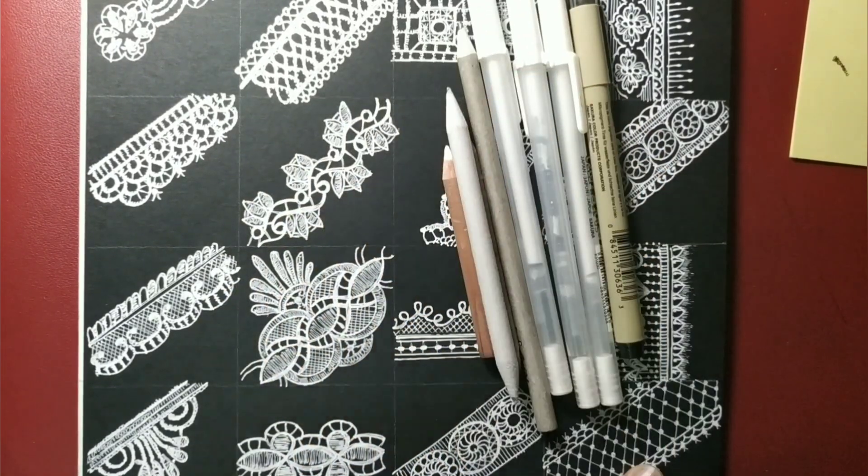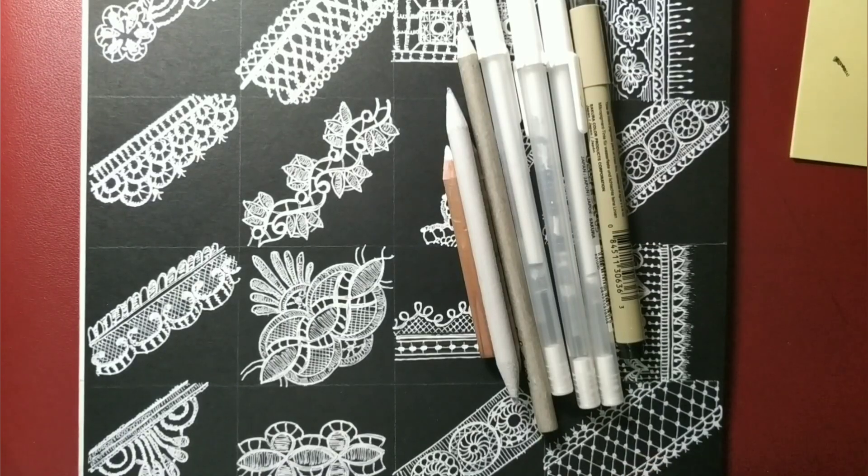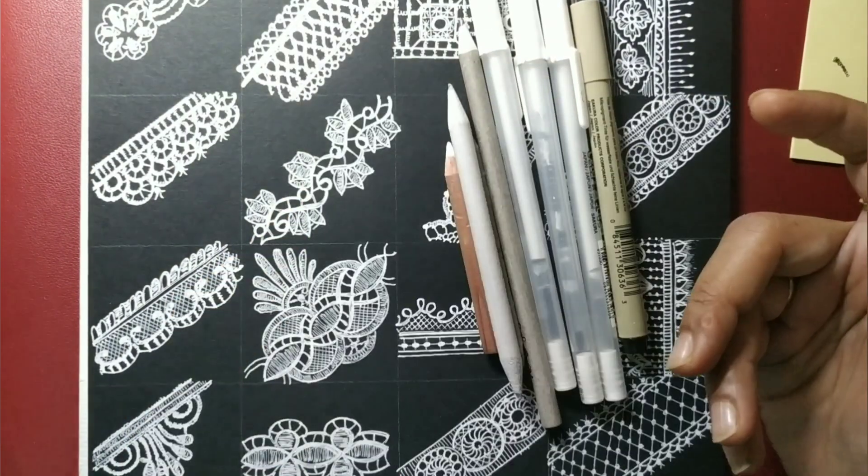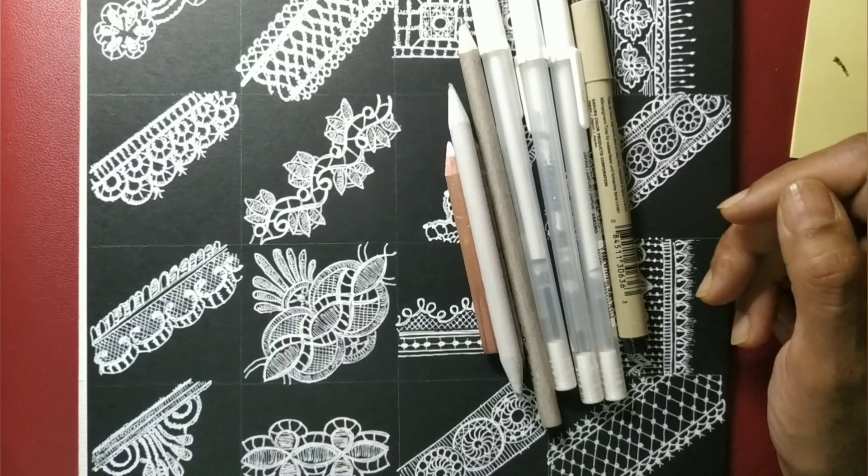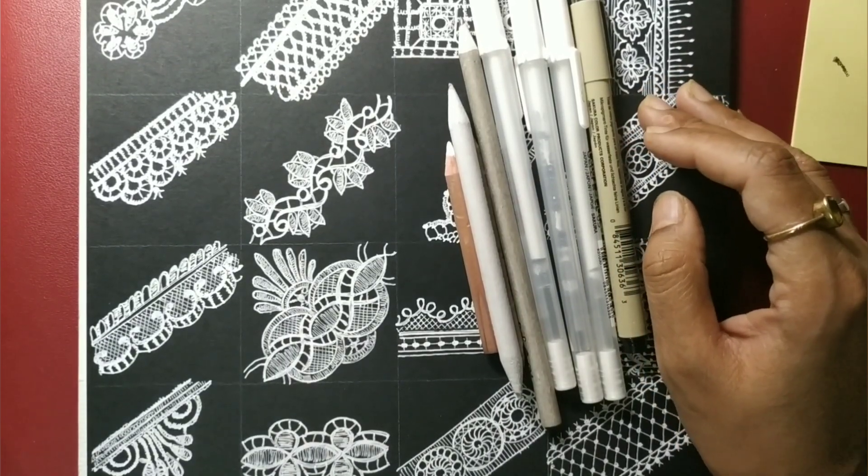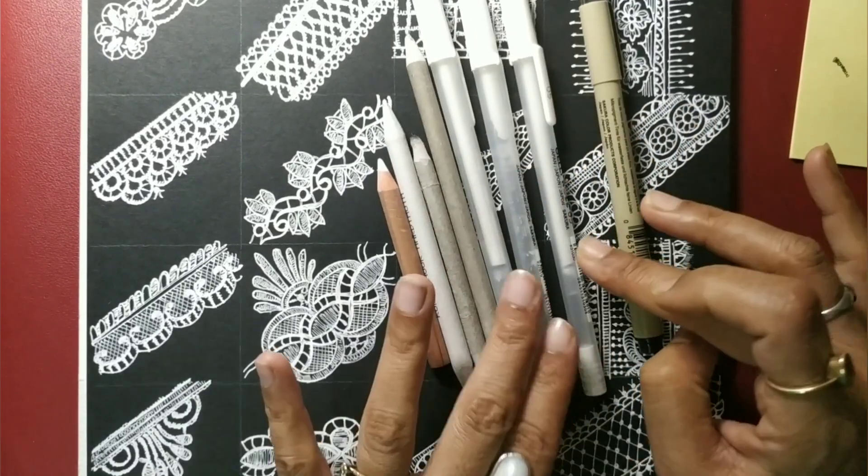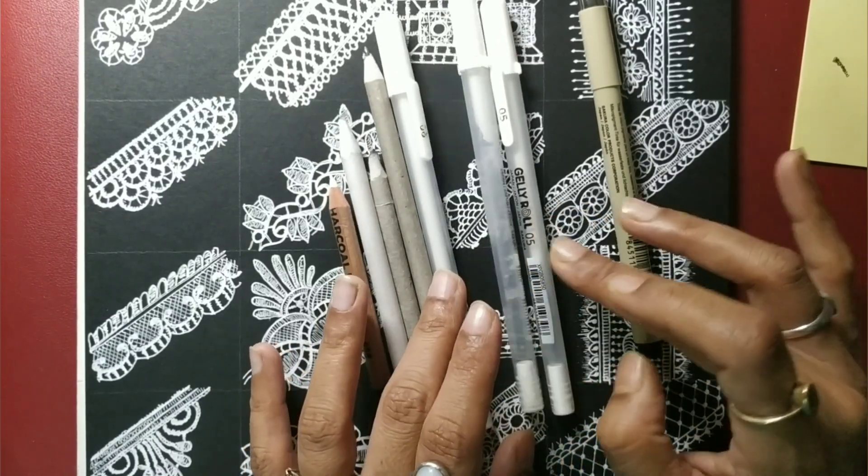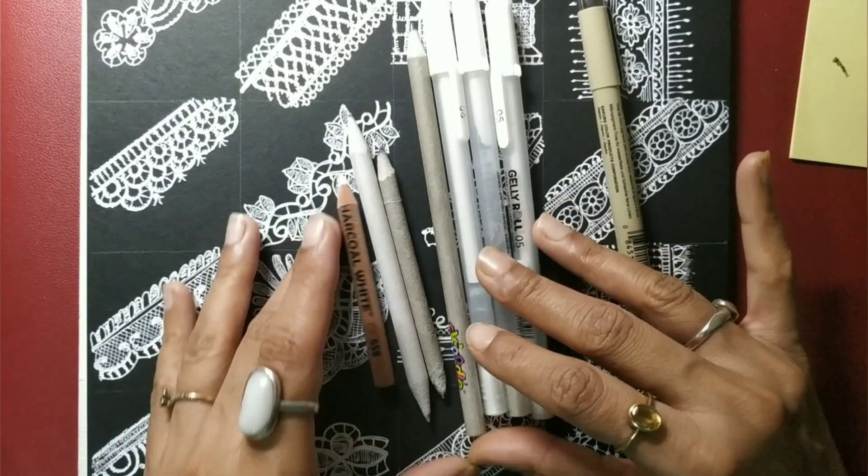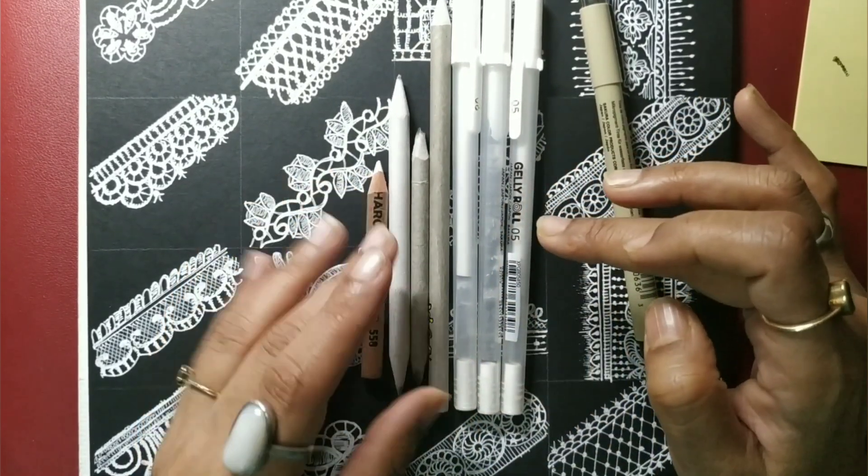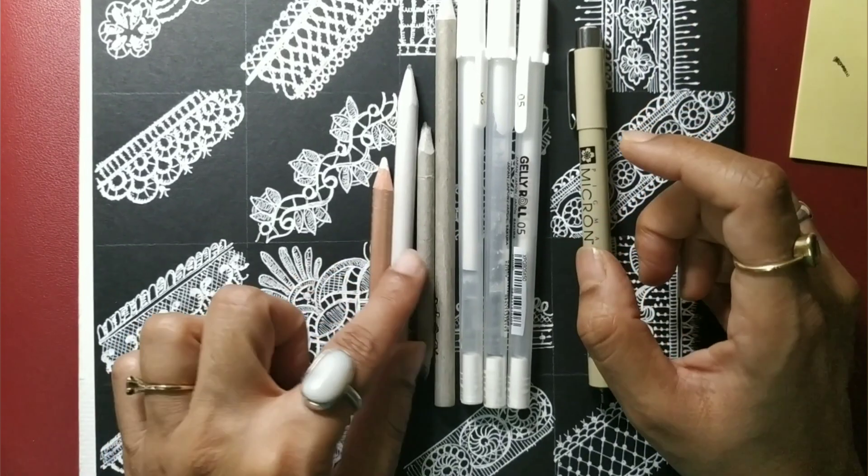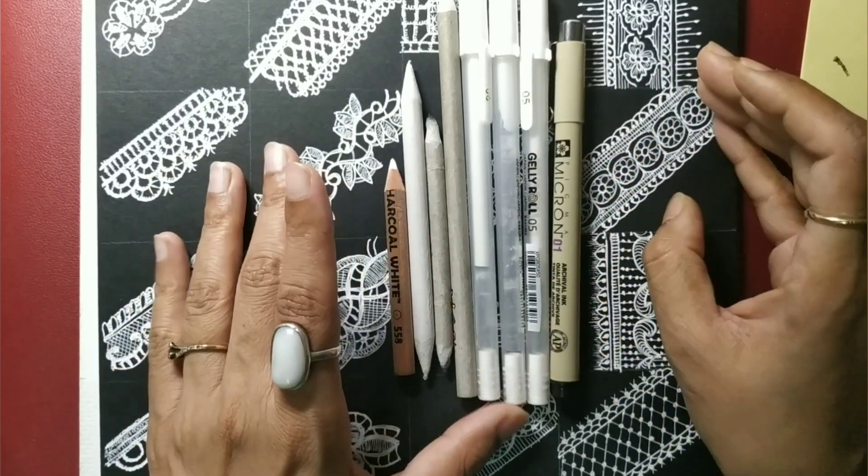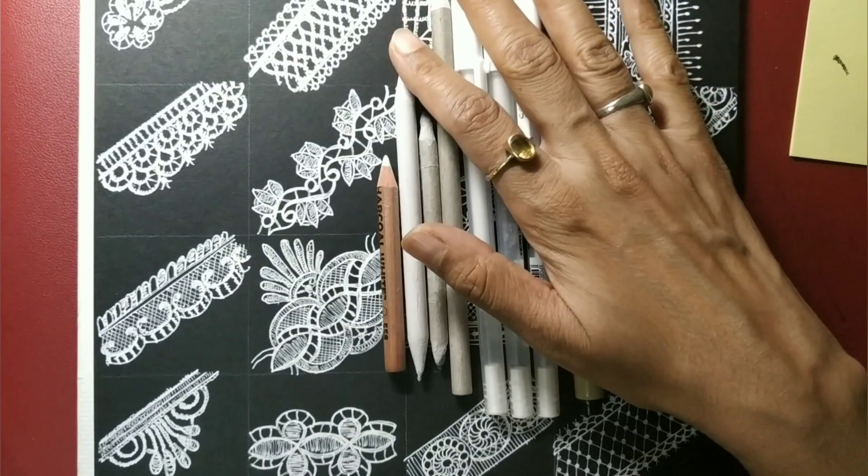These are just some examples of laces and the supplies you would require. I will be working on apprentice size tiles, which are 4.5 inch by 4.5 inch. Black and white looks nice for laces, so I'll be working with Sakura jelly roll pens in sizes 10, 08, and possibly 05. Besides that, just a black pen and the white charcoal pencil, graphite pencil, and two blending stumps.